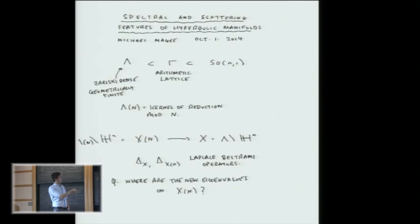The generality I want to allow is that we'll pass to a Zariski dense subgroup of gamma. This means that lambda can be an infinite index subgroup of SL2Z, for example.